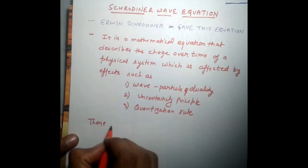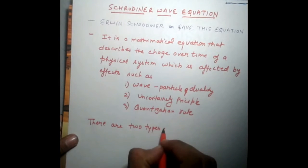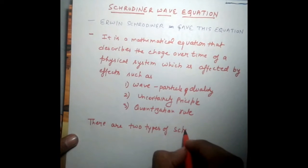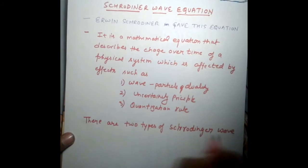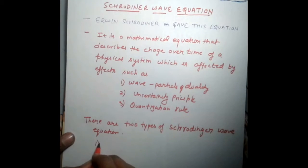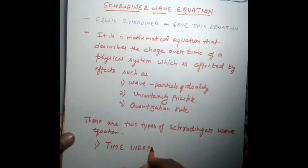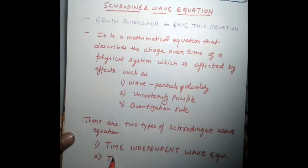There are two types of the Schrödinger wave equation: first, the time-independent wave equation, and second, the time-dependent wave equation.